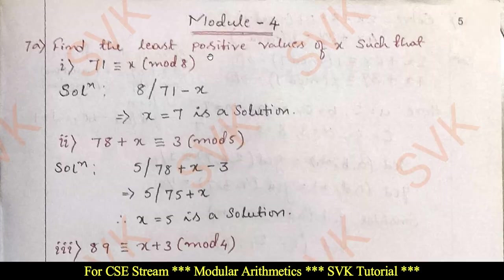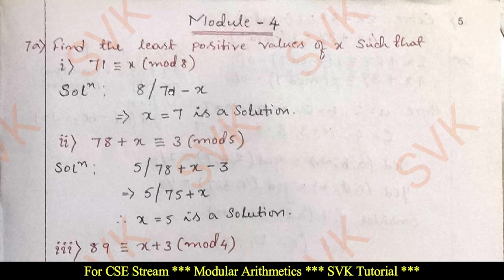Question number 7a: find the least positive values of x such that 71 ≡ x (mod 8). Moving on to the solution: 8 divides 71 minus x. For what value of x will 71 minus x be divisible by 8? By giving x equal to 7, we get 71 minus 7 equals 64, which is divisible by 8. That is the required solution.